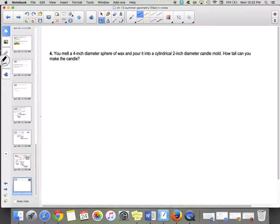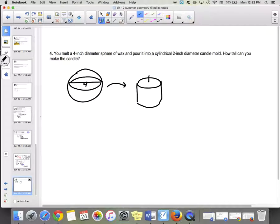Number four: you melt a 4-inch diameter sphere of wax and pour it into a cylindrical 2-inch diameter candle mold. We have a sphere that was 4 inches in diameter, and we're pouring it into a cylindrical candle mold. How tall can you make the candle?